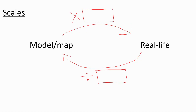Whenever we look at a map, or we have a scale drawing, or a scale model, there's some kind of ratio involved. Essentially, to go from the length of something on a model or on a map, you multiply by a scale factor to get to what it is in real life, and to get from real life back to the model or the map, you divide by a scale factor.